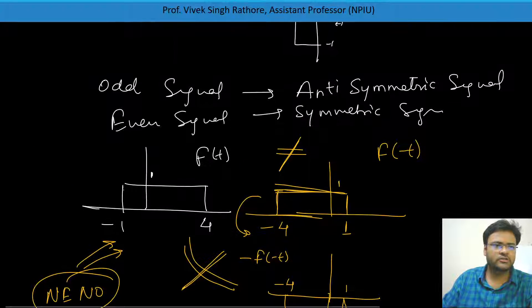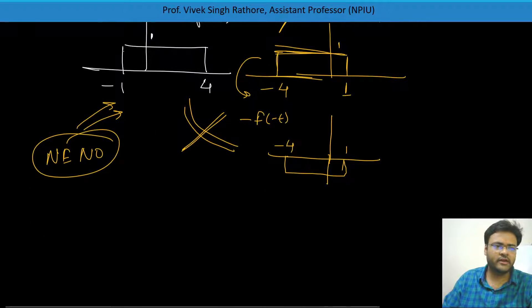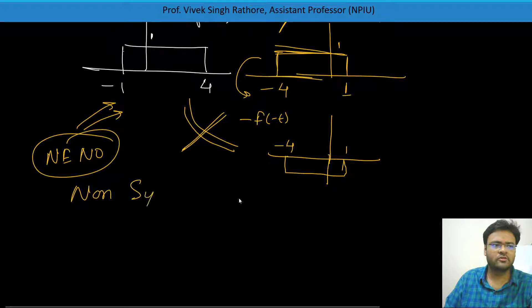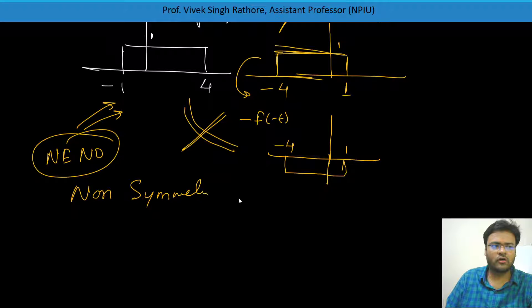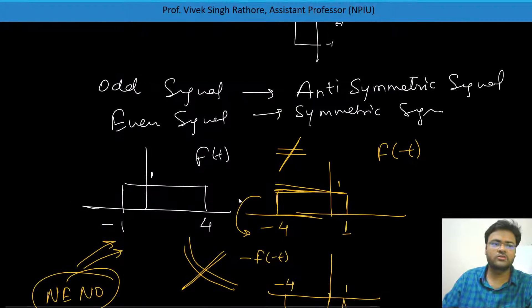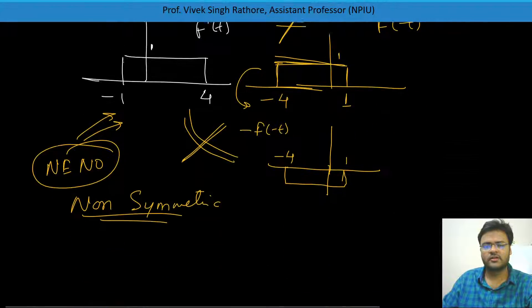This signal can be called a non-symmetric signal. So we have seen symmetric signal (even), anti-symmetric signal (odd), and non-symmetric signal (neither even nor odd). These are all the conditions.